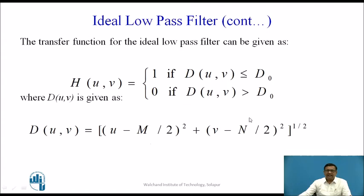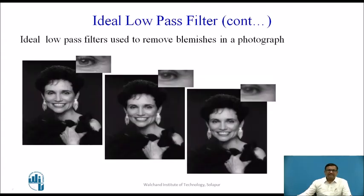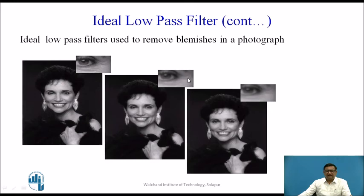Let us see the effect of the ideal low pass filter. We are applying it on this input image — the eye part of the subject is explored more here, and we can find blemishes. The ideal low pass filter is used to remove blemishes in a photograph. After applying the filter, the blemishes are reduced, and if the same ideal low pass filter is applied further, the blemishes vanish completely. This is one application of the ideal low pass filter.